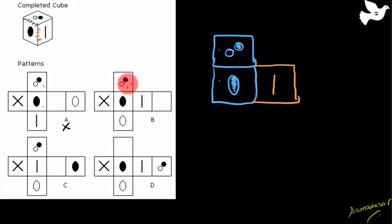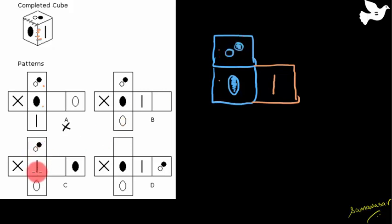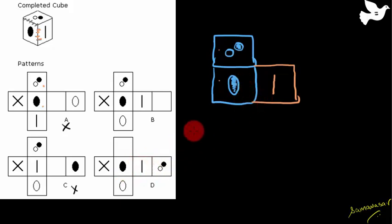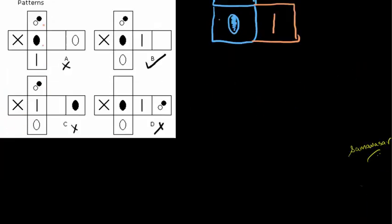Coming to the next option: this one matches, the oval matches, and the line matches — so this is in fact the correct answer. Moving on to verify the others: this matches, but below it I don't have the oval — disqualified. In the next one, the oval is there, the line is there, but the remaining symbol is not — again disqualified. So this is my correct answer.